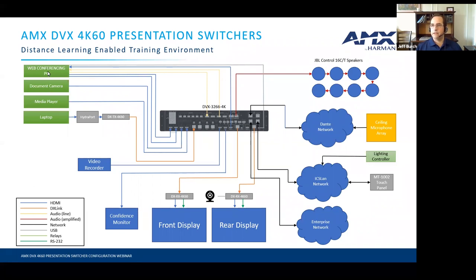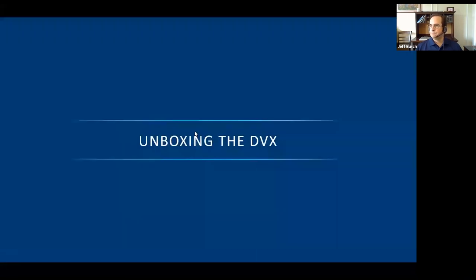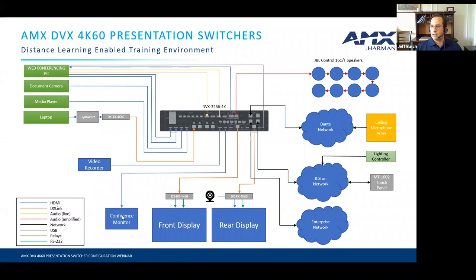We have a web conferencing PC delivering two HDMI inputs, a document camera, a media player, and a remote laptop connecting over DX Link through a DX Link transmitter at a table or lectern. For video outputs, there's a video recorder, a confidence monitor, a main front display for the audience, and a main rear display for the presenter. We have analog audio ins and outs going to the web conferencing PC, amplified output to speakers, a ceiling microphone array through Dante, and networking pieces.